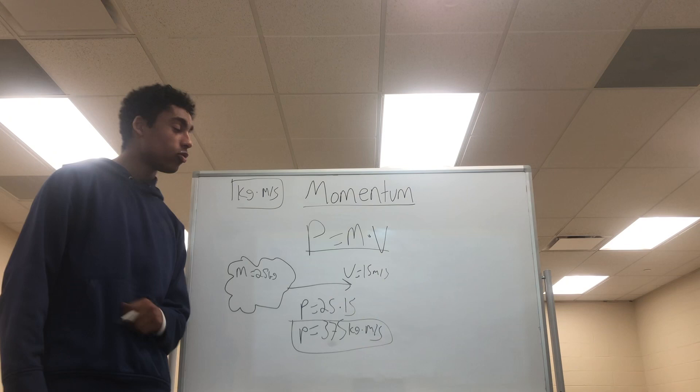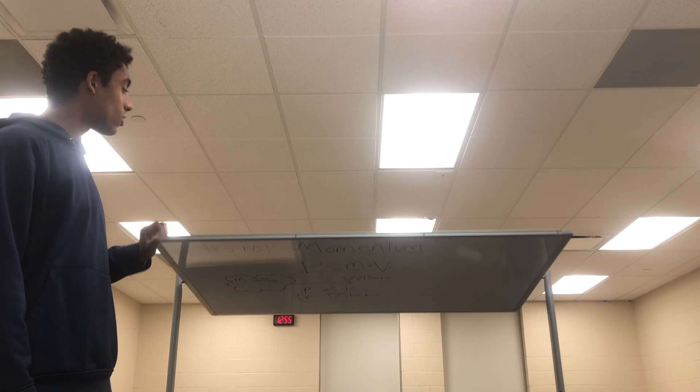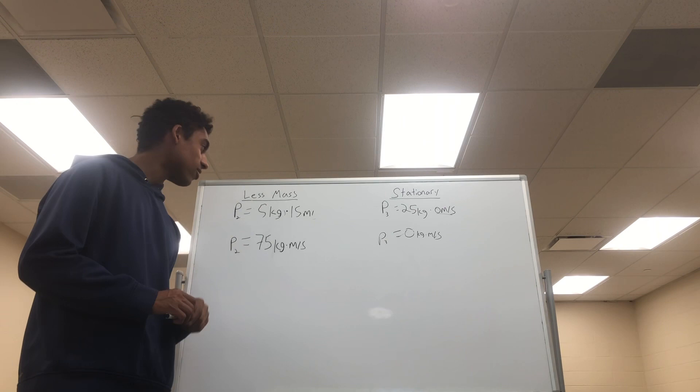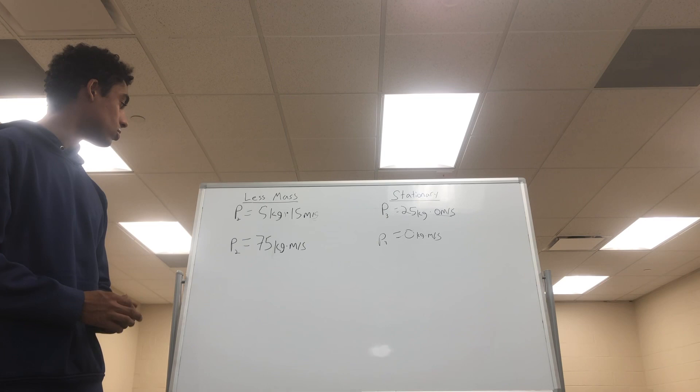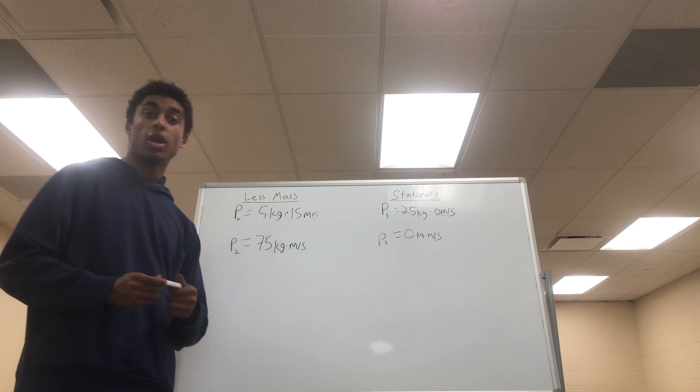Let's take a look at two scenarios of the same rock where this happens. We have one scenario with less mass. The speed stays the same, 15 meters per second, but the mass is greatly decreased to 5 kilograms, leaving us with a momentum of 75, much less than our original momentum of 375.